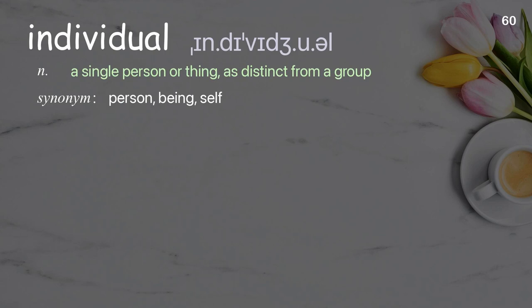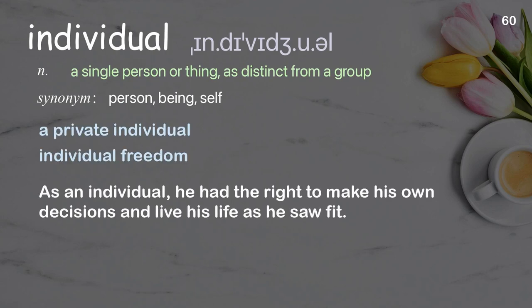Individual. A single person or thing as distinct from a group. Examples: a private individual, individual freedom. As an individual, he had the right to make his own decisions and live his life as he saw fit.